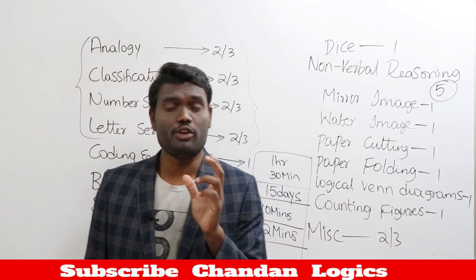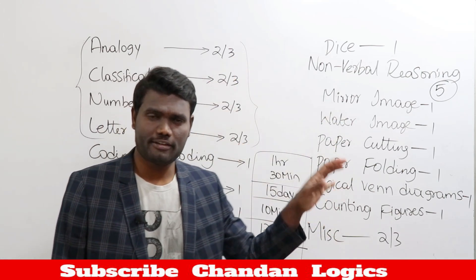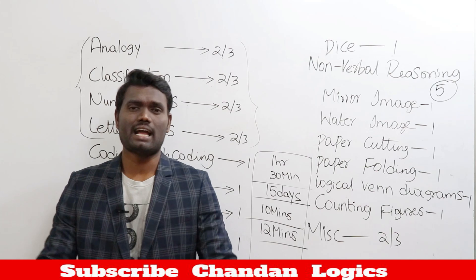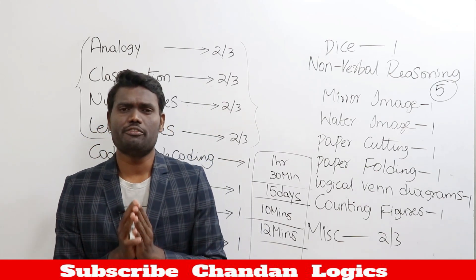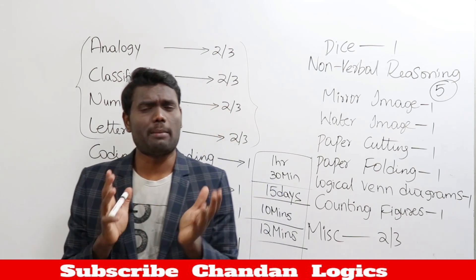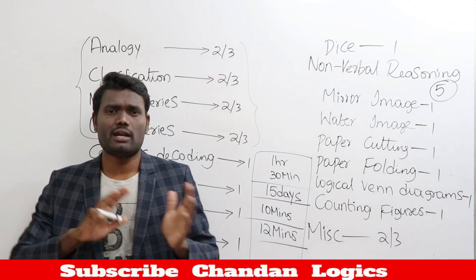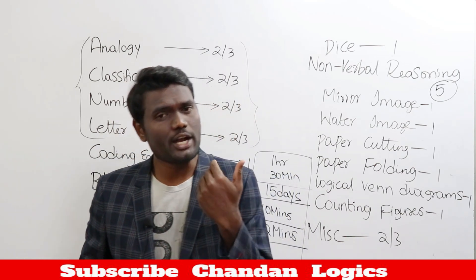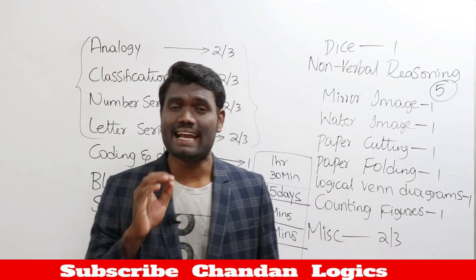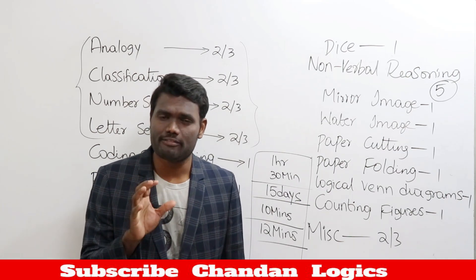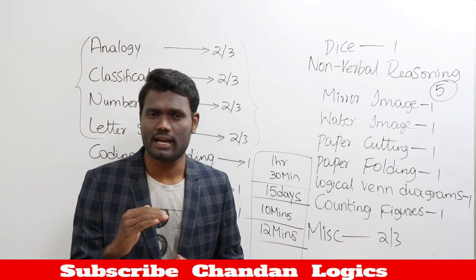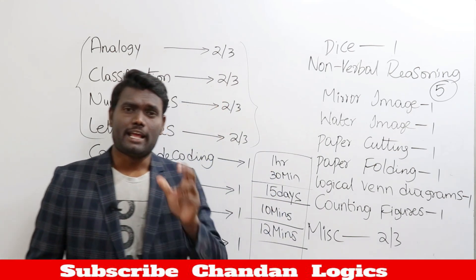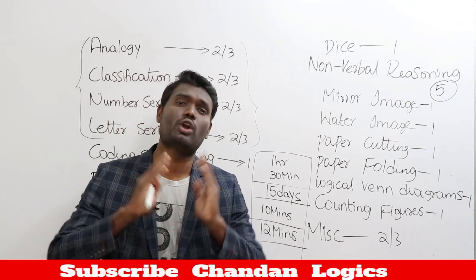Keep your reasoning time to 12 to 13 minutes because you have other sections to attend as well, and you have only 60 minutes for 100 questions. In the SSC Tier 1, 2, and 3 structure, every mark counts because your Tier 1 and Tier 2 marks combine for Tier 3 eligibility — your Tier 3 descriptive paper is only evaluated if you fulfill the combined score eligibility criteria.